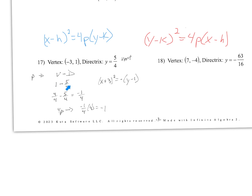So p = −1/4, and multiplying by 4 gives 4p = −1. In our equation, 4p is negative 1 — you can see the negative. Filling in the rest: h is −3, so it's (x + 3)² = −1(y − k). k is 1, so (x + 3)² = −1(y − 1). That is the equation from this information.